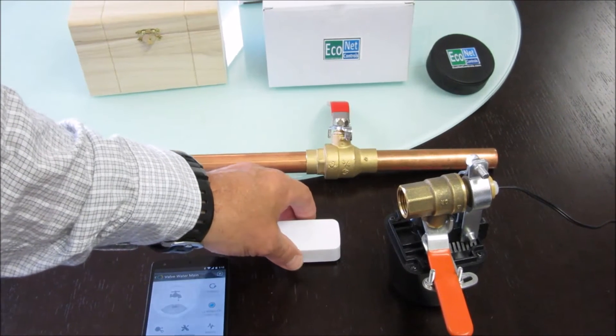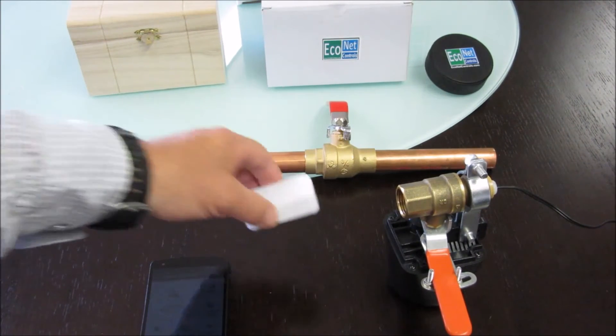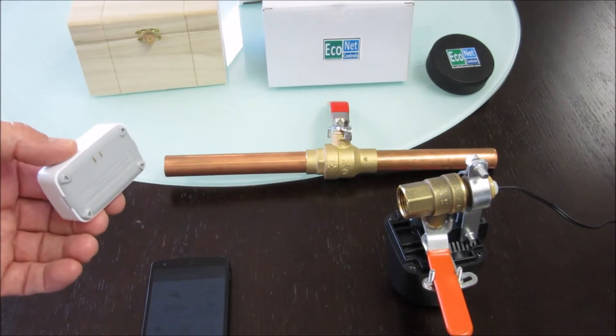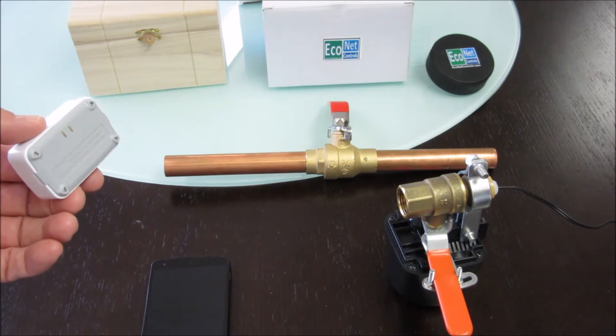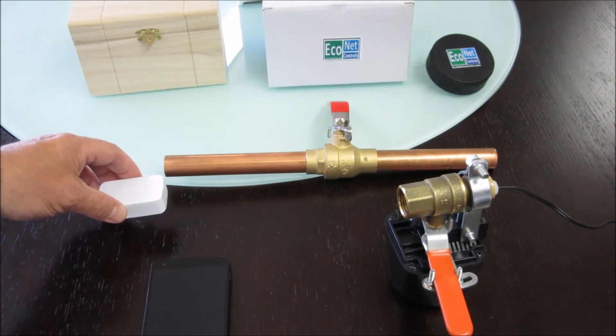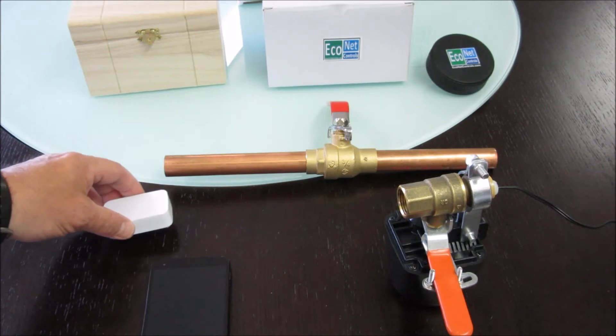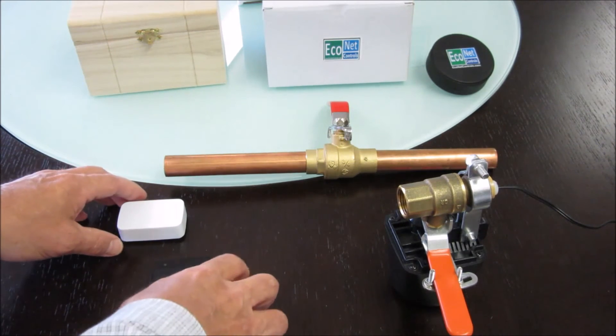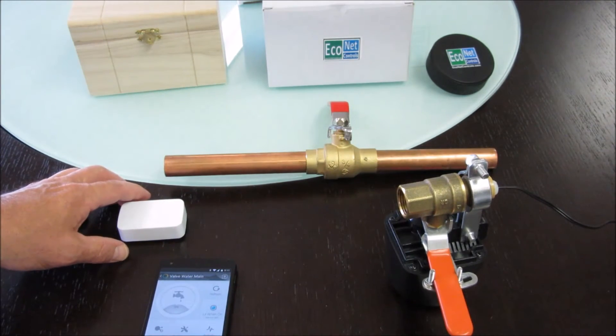So the idea would be you'd put this in a location where there might be a leak - so under your sink in the kitchen, or in the laundry room on the floor behind the washer and dryer, or really anywhere where you think you might get a leak in the basement by the water heater. And ideally you put a number of these out.